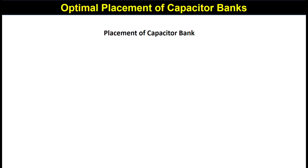Next, placement of capacitor banks. Now that we have calculated the required capacitor bank size, we need to determine the placement. There are two ways: you can place the capacitor bank at a location based on manual calculation, or you can use ETAP software to find the optimal location. Here we will first discuss general guidelines, and in the next lecture we will use ETAP software to demonstrate how to place capacitor banks.